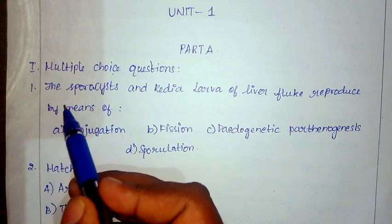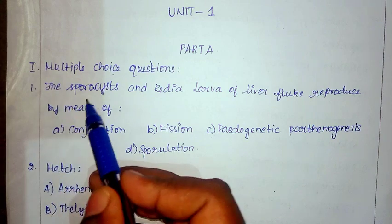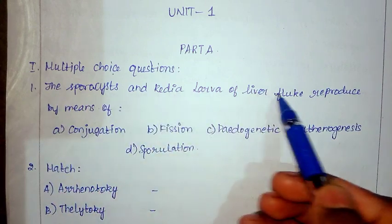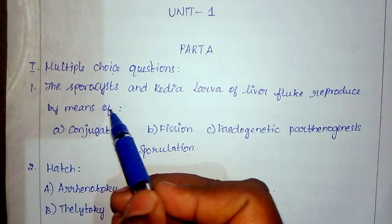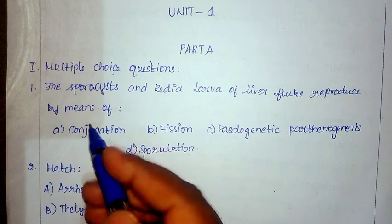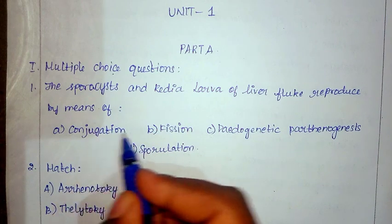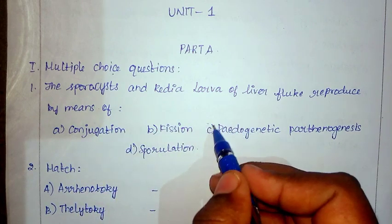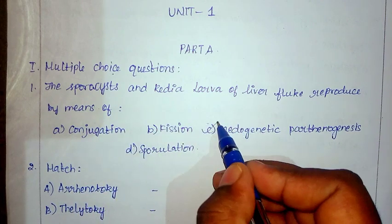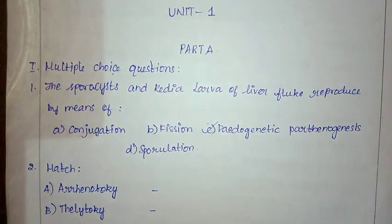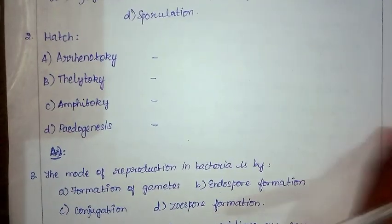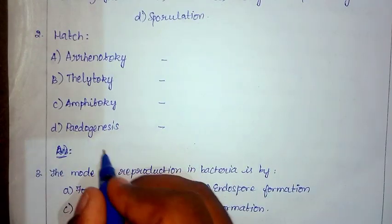For the first question, the sporocytes and radial larva of liver fluke reproduced by means of — the correct option is option C, paedogenetic. For the second question, the correct answer is option C.